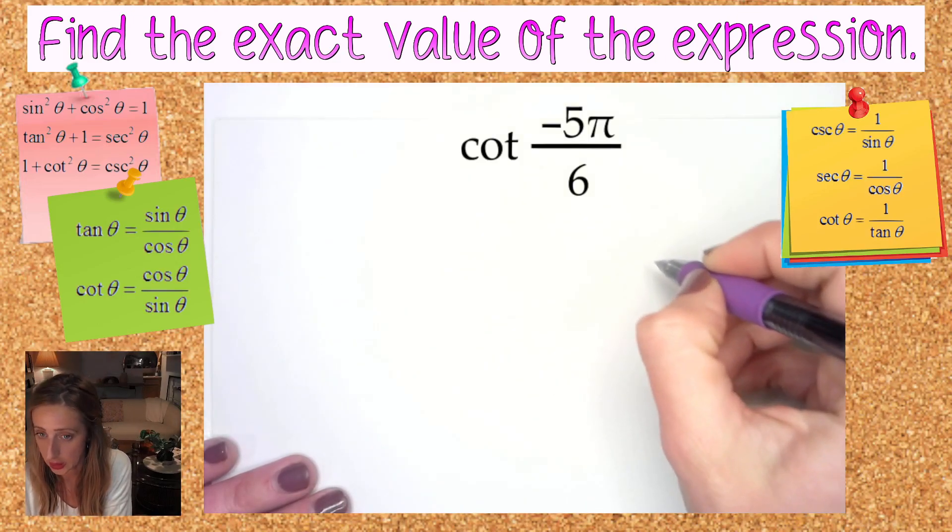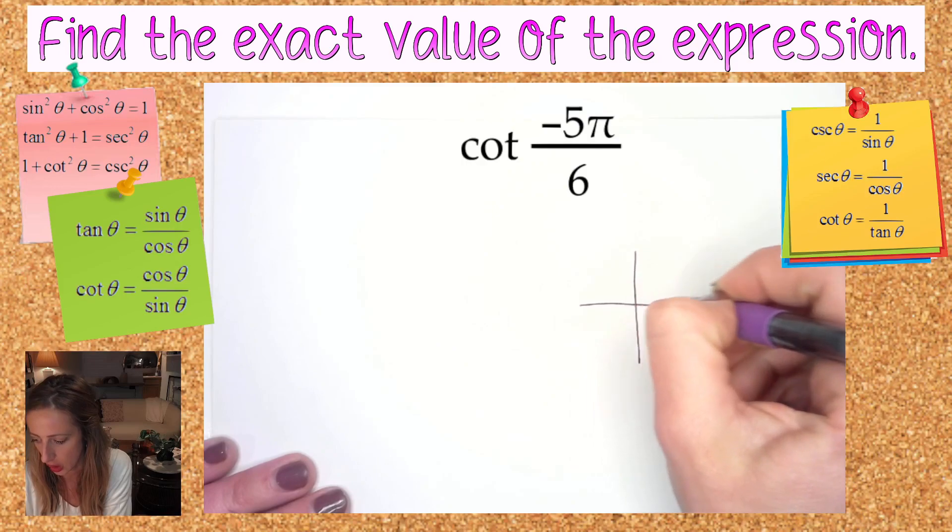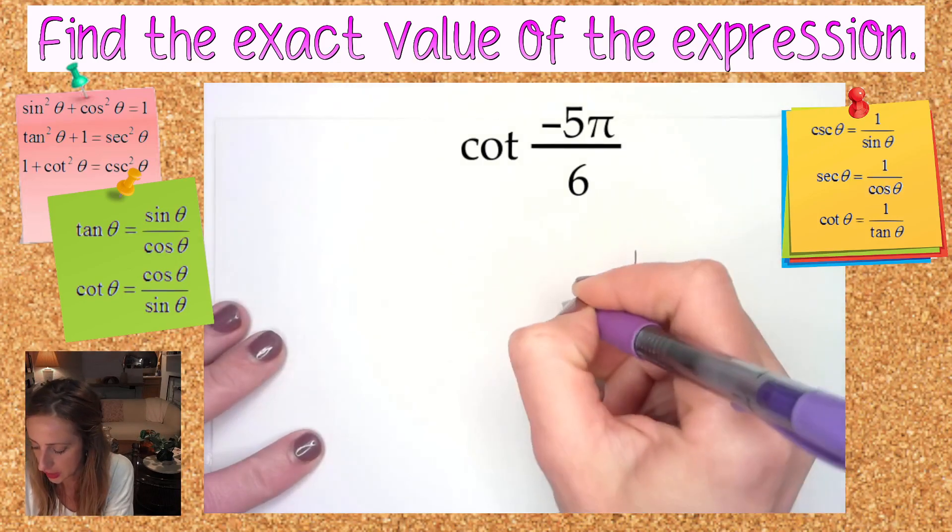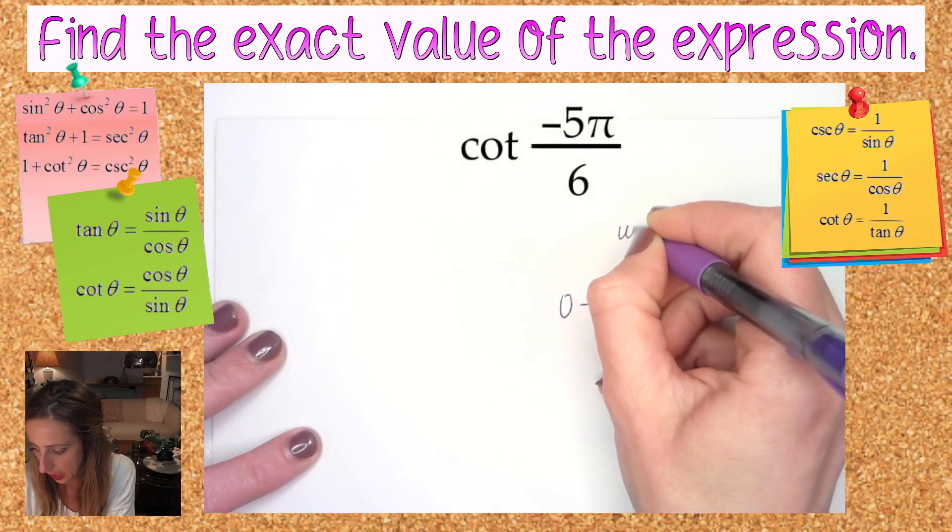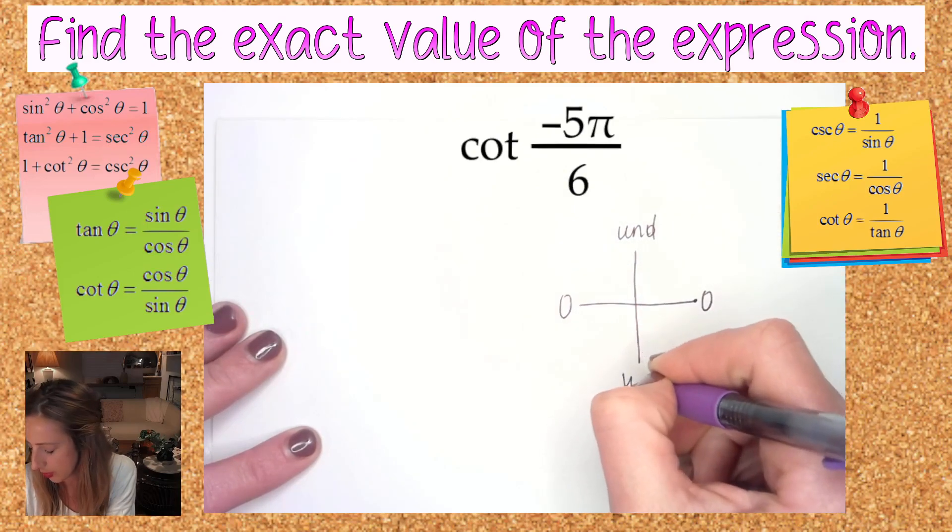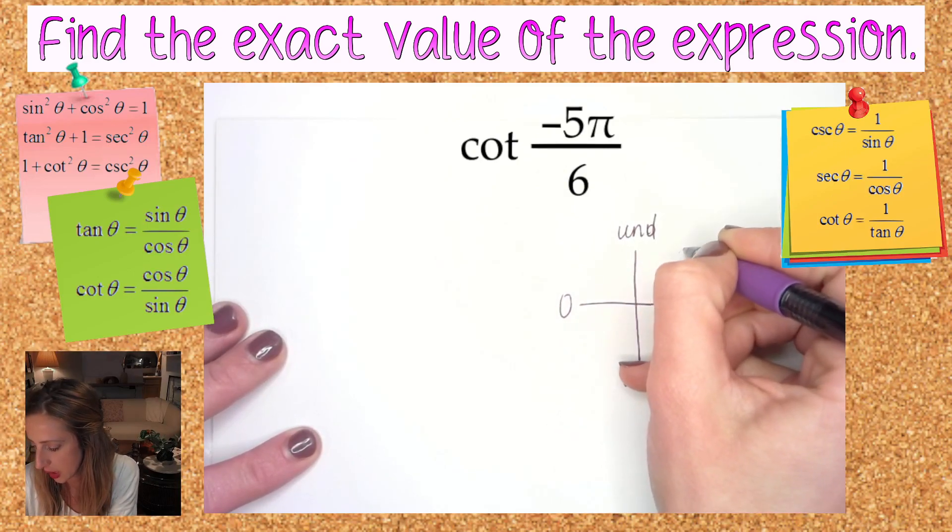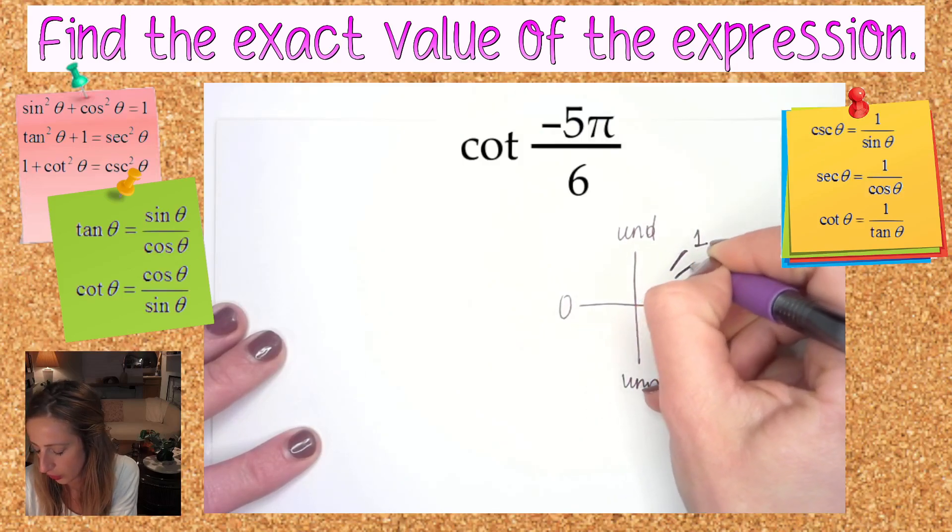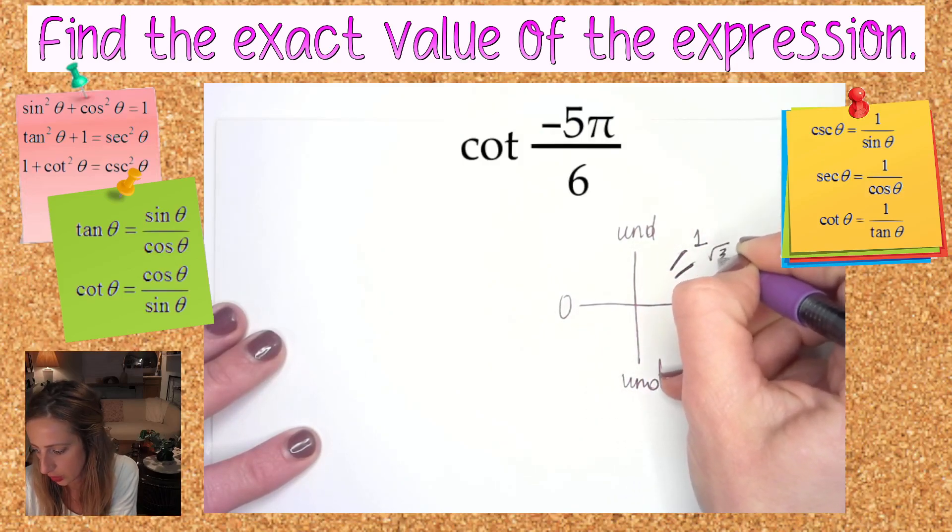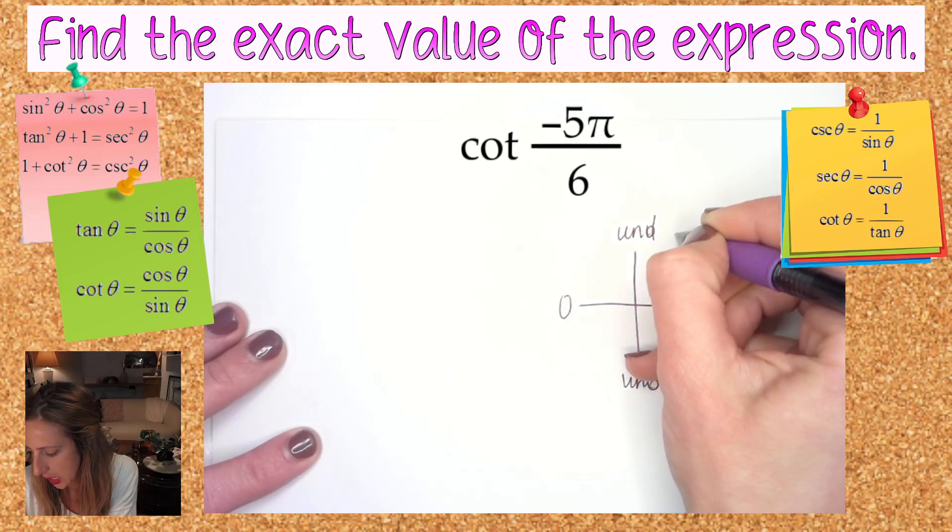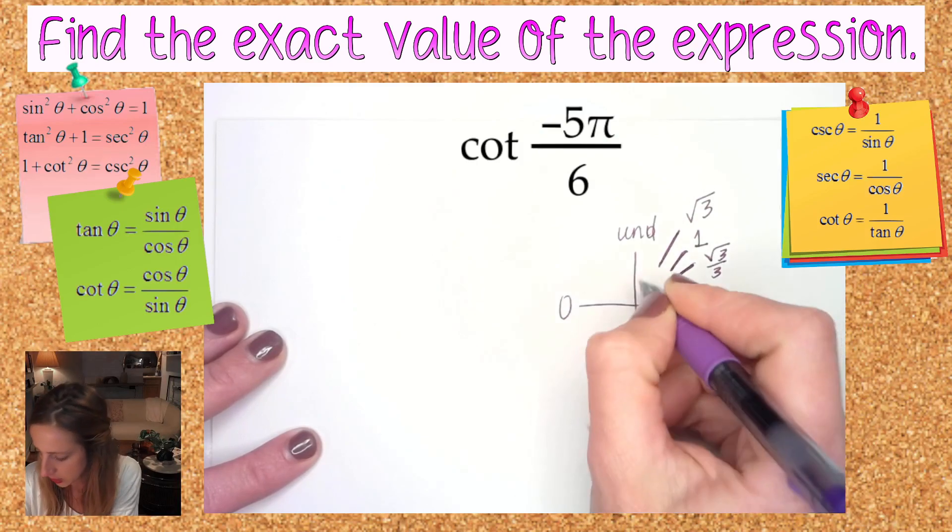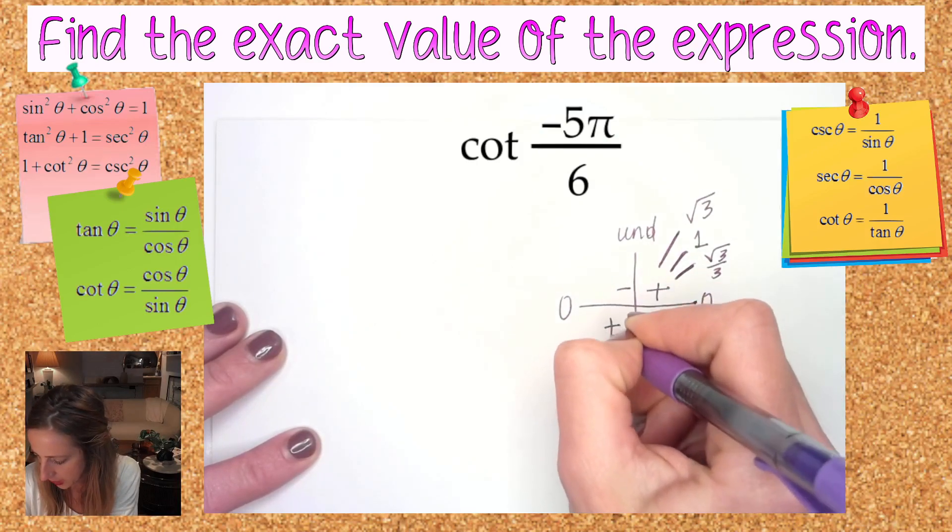Tangent is equal to 0 on these sides and undefined at the top and the bottom. Tangent at the middle is going to be equal to 1. Tangent over here at this spot is √3 over 3, and tangent over here is √3. What else do we know about tangent? Positive, negative, positive, negative.